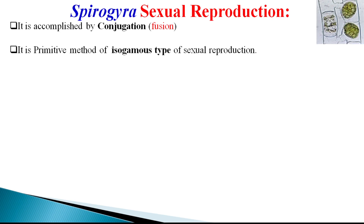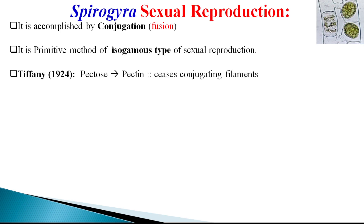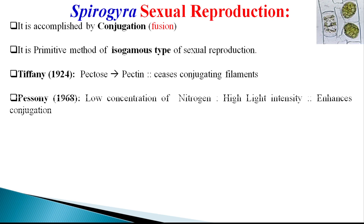Conjugation involves the fusion of the entire content of two similar unspecialized vegetative cells when they become yoked. According to Tiffany (1924), the pectin present in the cell wall becomes water soluble, forming pectin which seizes the filaments' movement. Peisoni suggested that lower nitrogen concentration and high light intensity are also enhancement factors causing conjugation.